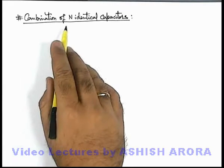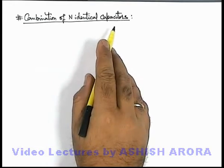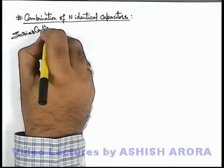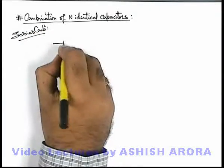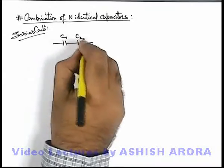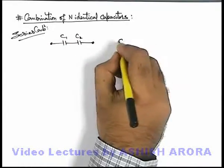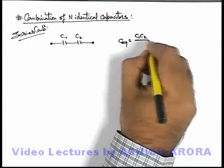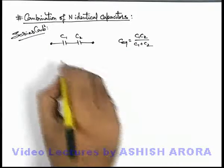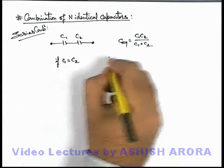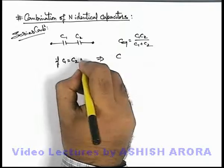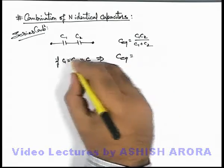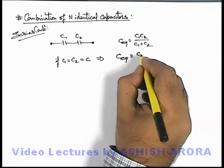Let us discuss the combination of n identical capacitors. We will discuss two cases. The first one is series combination. We know well that in the case of two capacitors C1 and C2 connected in series, the equivalent capacitance is given as C1·C2 divided by C1 plus C2. Now if C1 is equal to C2 equal to C, then the equivalent capacitance can be written as C by 2.